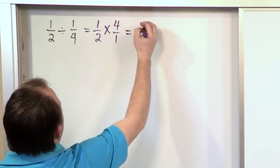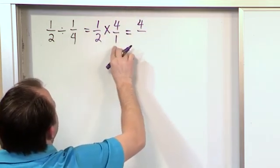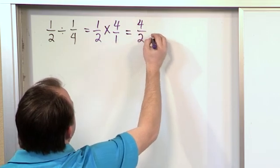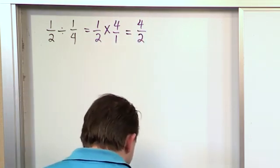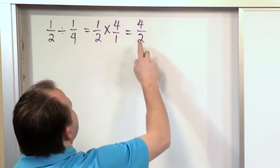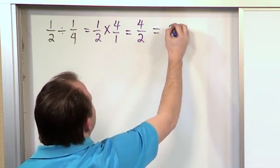Then we multiply the tops, 1 times 4 is 4. Multiply the bottoms, 2 times 1 is 2. And then we try to simplify but then we see 4 over 2 is the same as 4 divided by 2. And of course that's 2.